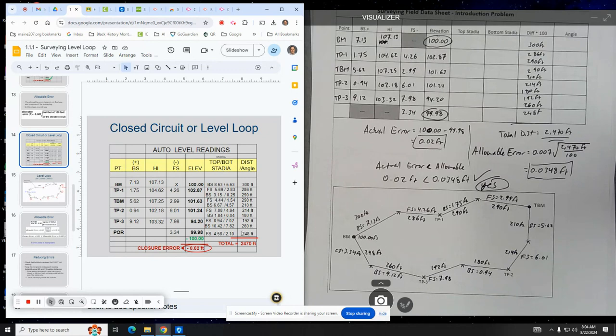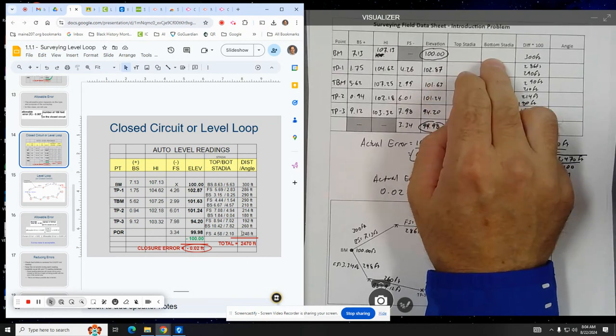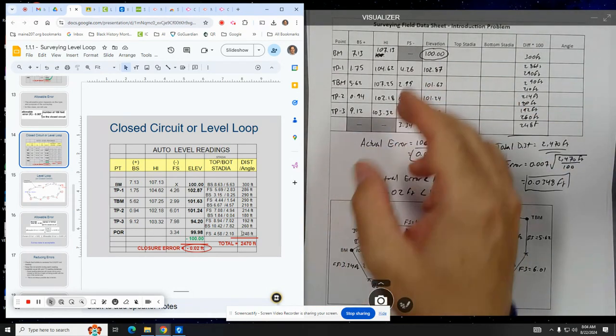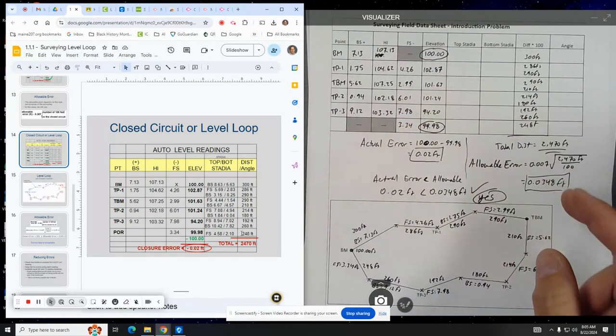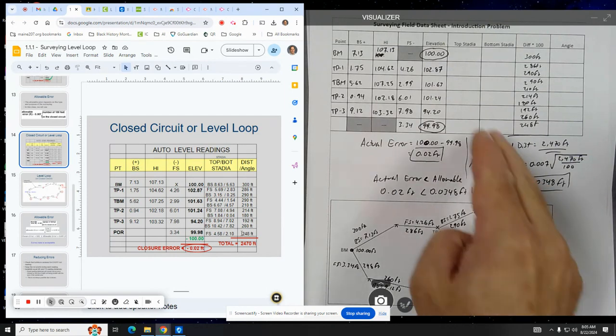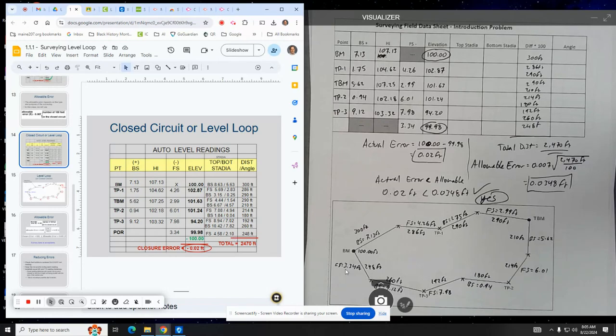In the next problem, so in practice problem, this is the intro problem. But in practice problem one, I'll go over a video, and there I'll go into a little bit more detail of the top stadia and bottom stadia. It's the exact same problem in terms of foresight, backside, and doing this calculation. And then at the end, we're going to do the allowable error calculation. But I will go over more detail of how these distances are figured out. If you have any questions, ask your teacher.